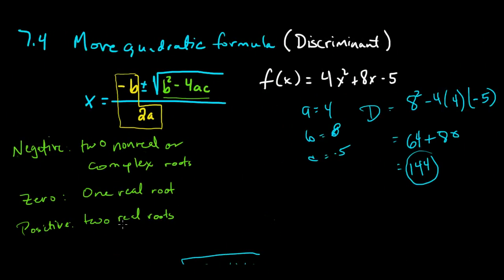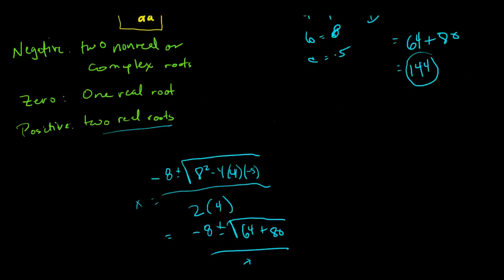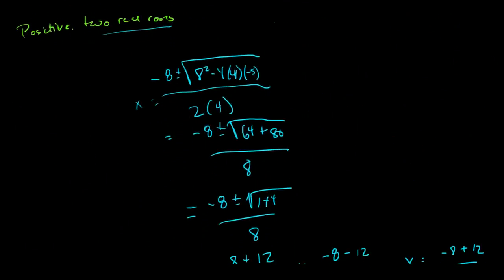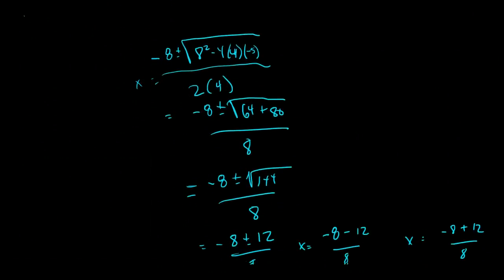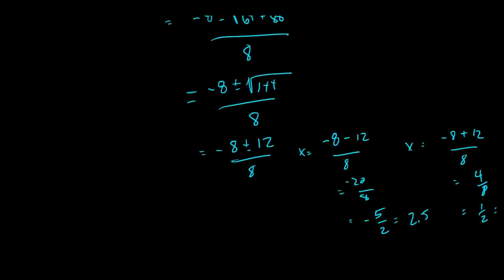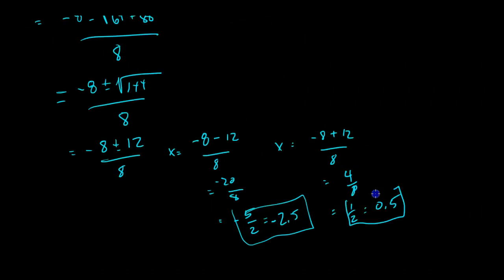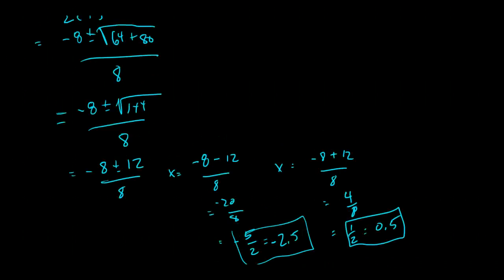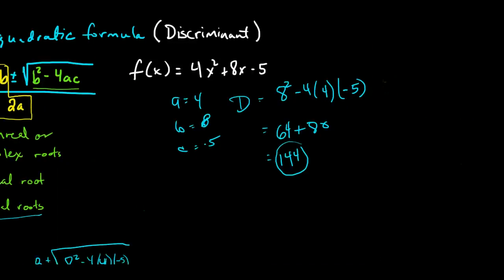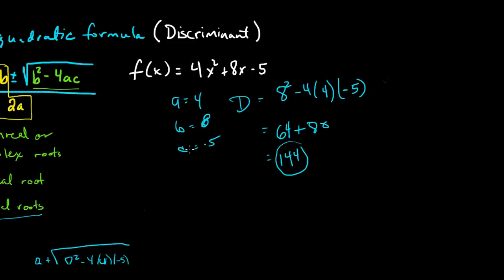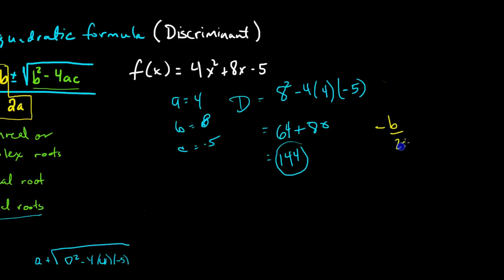A positive discriminant means I'm going to have two real roots. Having solved this with the quadratic formula, I see that the roots should be negative 2.5 and negative one half. Those are my two roots. Let's find the vertex just to confirm this parabola will cross the x-axis. We'll use negative b over 2a.